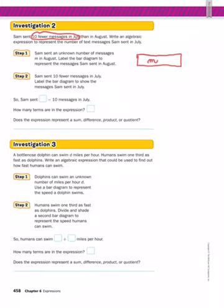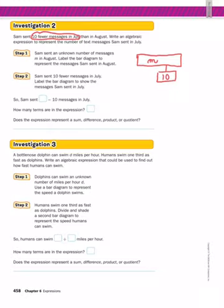Here's what we do know: Sam sent 10 fewer messages in July than in August. To show that we had 10 fewer, we drop 10 down below — that represents taking 10 away. And that helps us see our expression: it's M — remember M is the messages sent in July — minus 10.